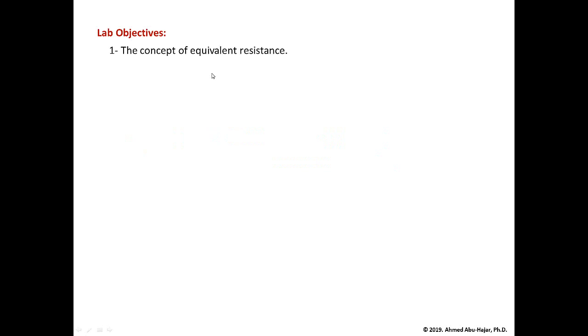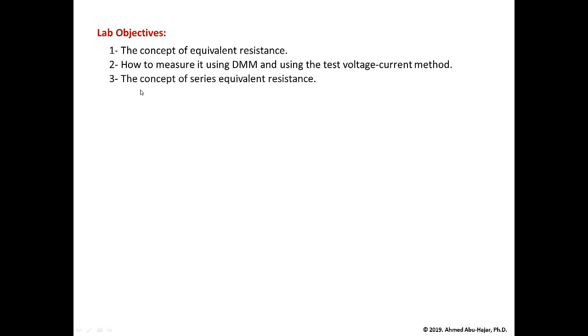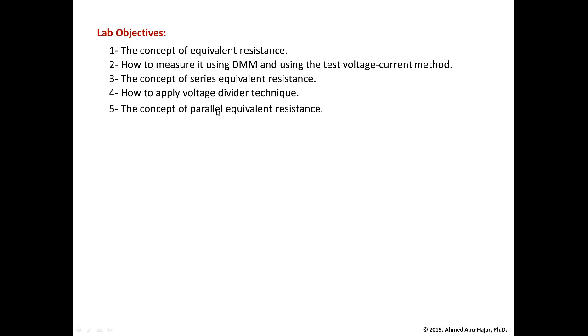Here are the lab objectives. The first objective is for students to understand the concept of equivalent resistance — what it is and how to obtain it. The second objective is how to measure the equivalent resistance using the DMM and using the test voltage, test current method. Then students need to apply the concept of series equivalent resistance and the voltage divider technique, and then deal with the concept of parallel equivalent resistance and learn how to apply the current divider technique.